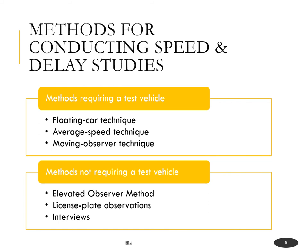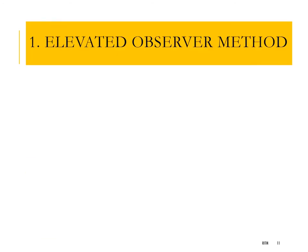For data collection, there are two broad categories: methods using a test vehicle that moves along with the traffic stream, and methods not requiring a test vehicle. Methods requiring a test vehicle include the floating car method, average speed technique, and moving observer method. Methods not requiring a test vehicle include elevated observer method, license plate observations, and interviews.